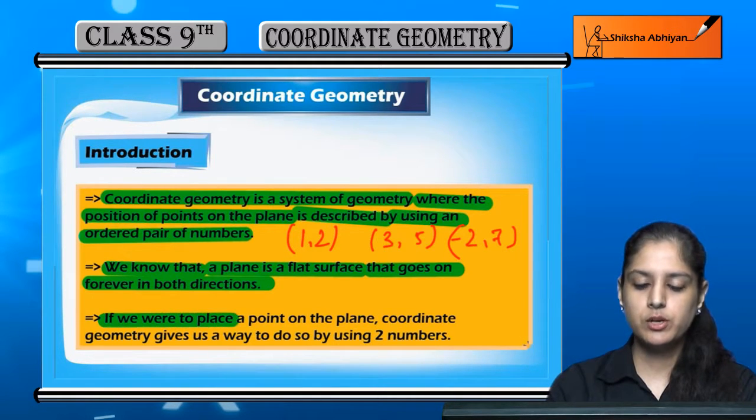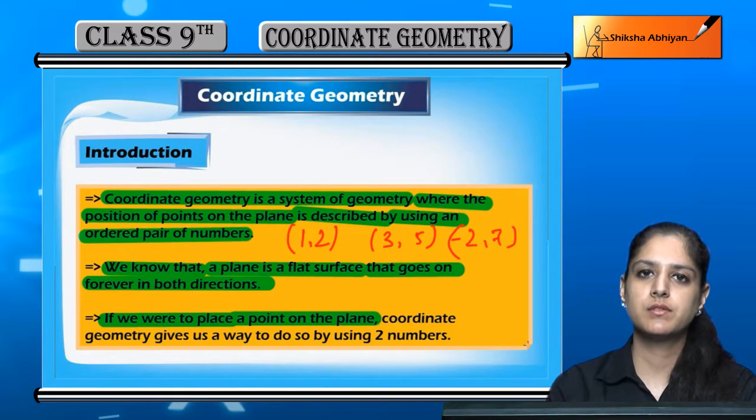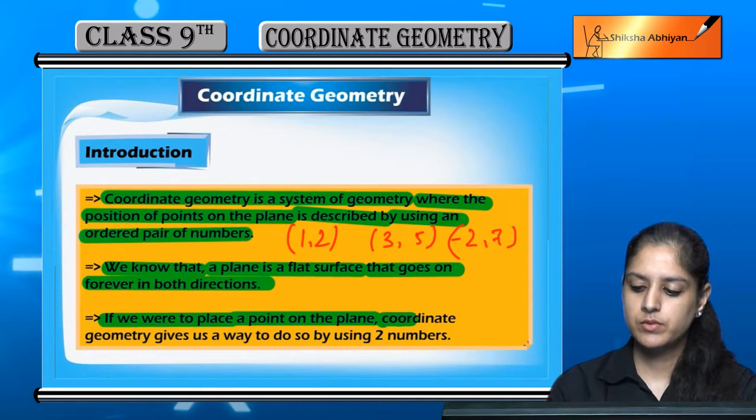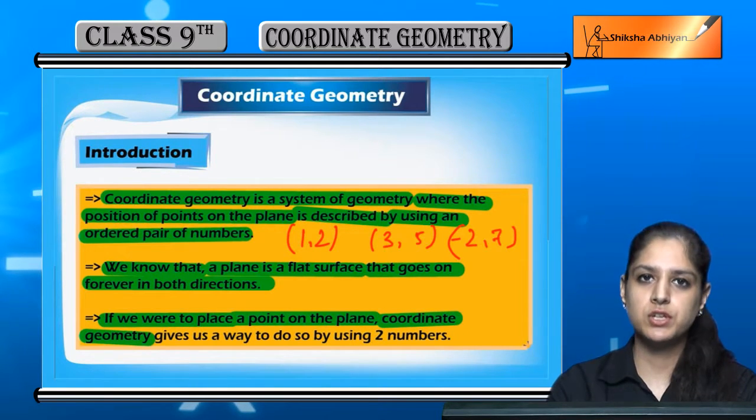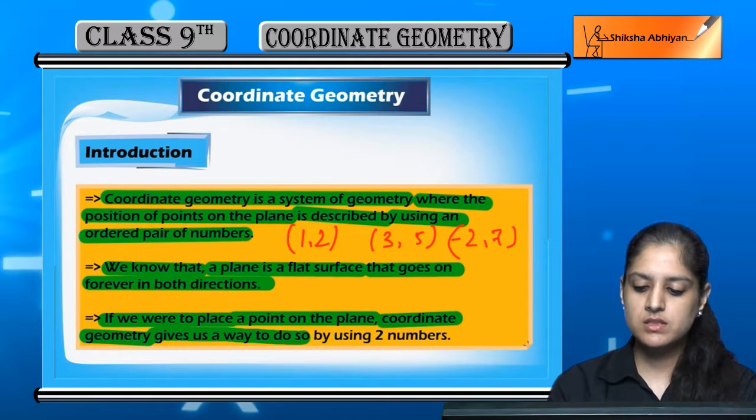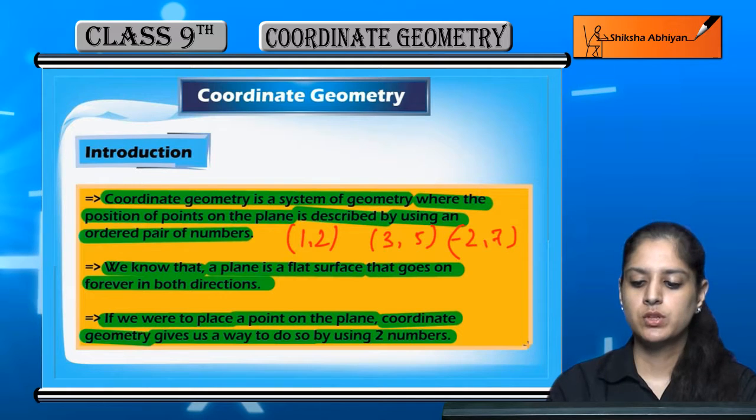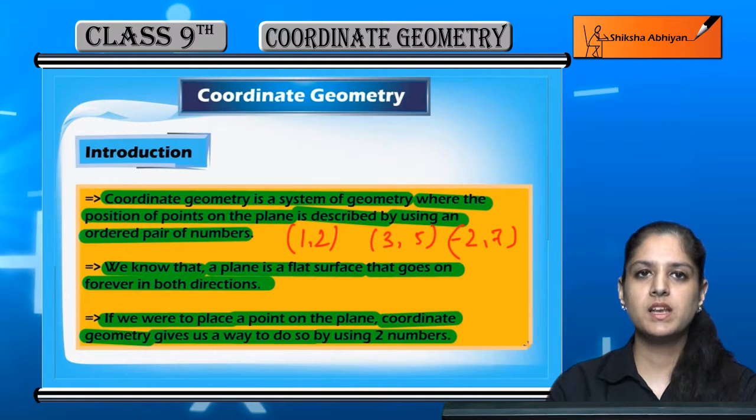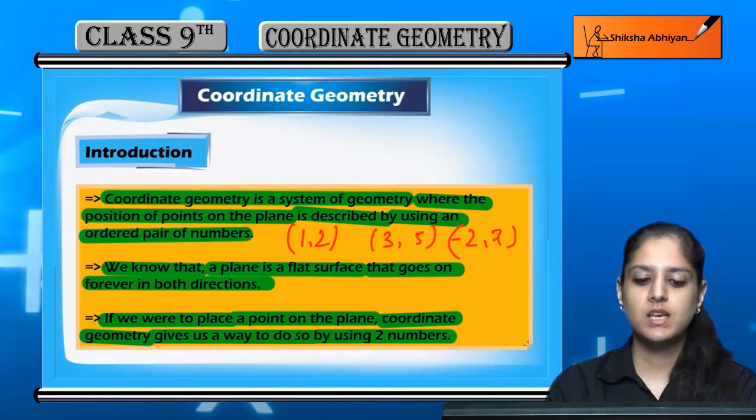If we were to place a point on the plane, coordinate geometry gives us a way to do so by using two numbers. Because the plane is a flat surface with length and breadth, height doesn't work.